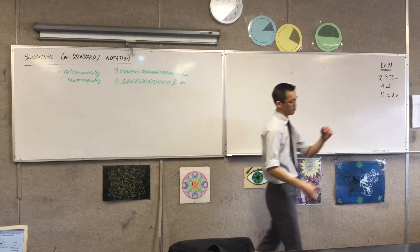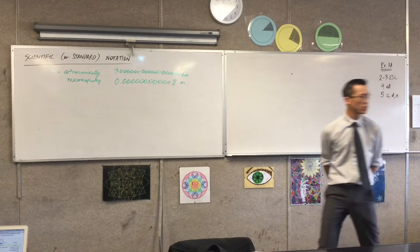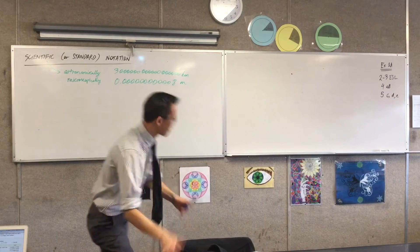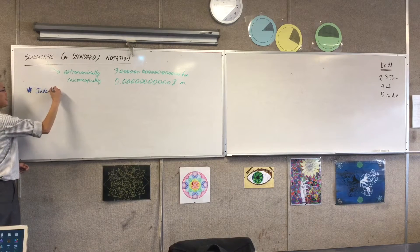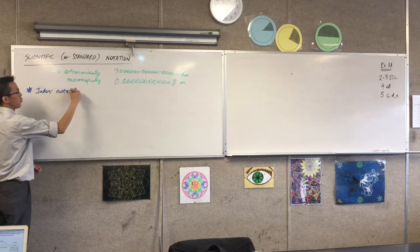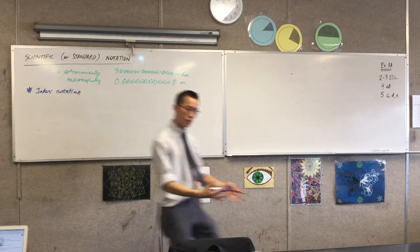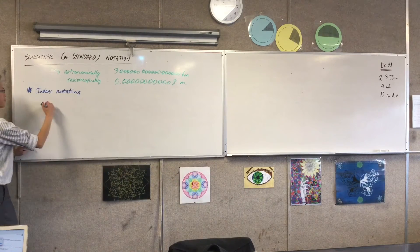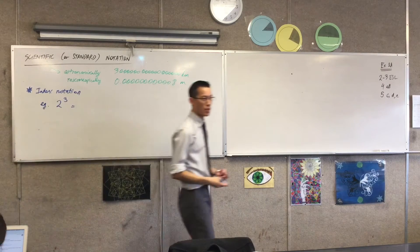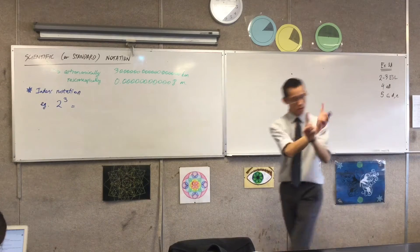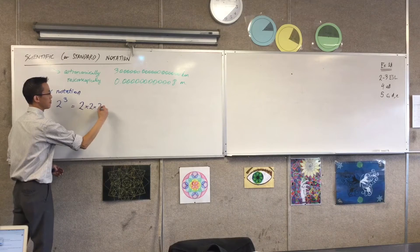The tool that we use to make this more concise is index notation. So we just need to review that. Index notation is what makes scientific notation work. So let's recall — if I wrote for you something like 2 cubed, that's an abbreviation. What's it an abbreviation for? 2 times 2 times 2. I'm multiplying 2 three times.